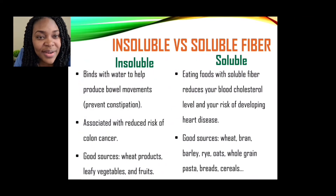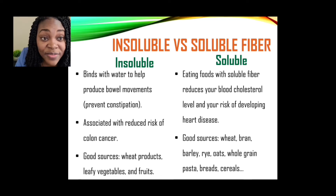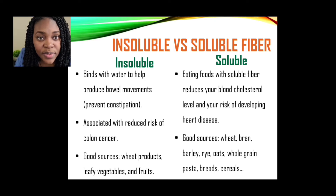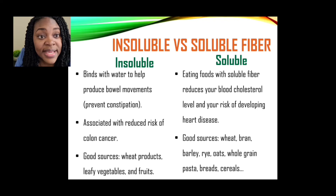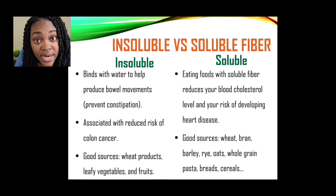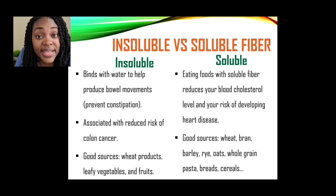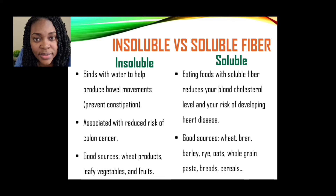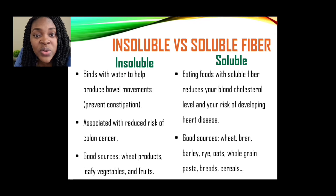Let us look at a comparison of insoluble versus soluble fibers. Insoluble fiber binds with water to help produce bowel movement and prevents constipation. Soluble fiber, on the other hand, reduces your blood cholesterol level and your risk of developing heart disease. Good sources of insoluble fiber are wheat products, leafy vegetables, and fruits. Good sources of soluble fiber include wheat bran, barley, rye, oats, whole grain pastas, breads, and cereals.